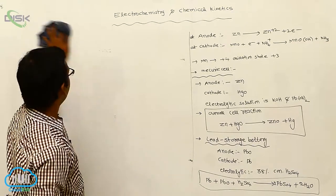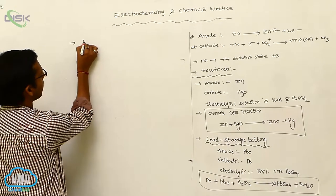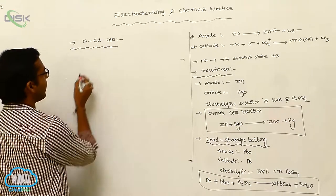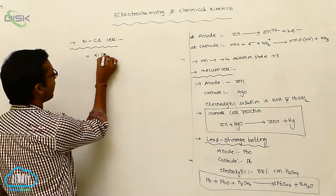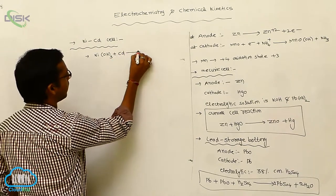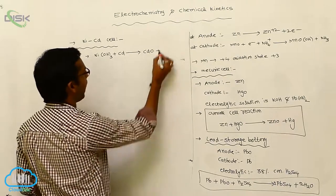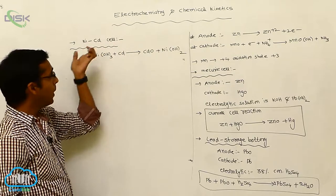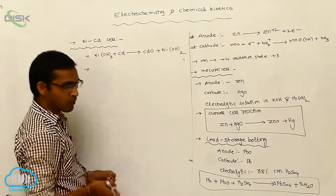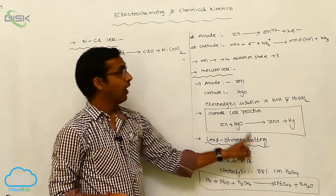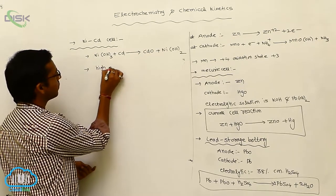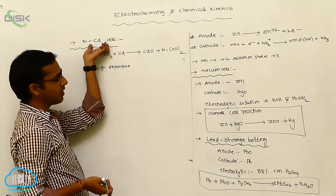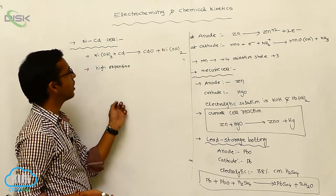Another example of a secondary battery is the nickel-cadmium cell. In the nickel-cadmium cell, the overall cell reaction is: nickel hydroxide reacts with cadmium, which is converted to cadmium hydroxide and produces nickel hydroxide. The nickel-cadmium cell is a more powerful battery than the lead storage battery. Both are examples of secondary batteries.